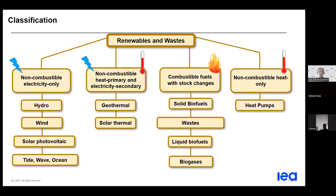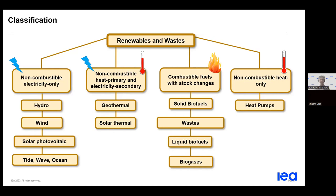If you consider wind or hydro, the first form of energy generated is mechanical energy — for example, from the rotation of a wind turbine — which is then converted into electricity. From a statistical point of view, we consider electricity as the primary form of energy, since the mechanical energy in almost all cases is directly converted into electricity. The mechanical energy would not be of interest statistically, since electricity is the first common marketable commodity generated.